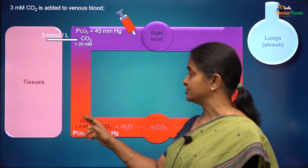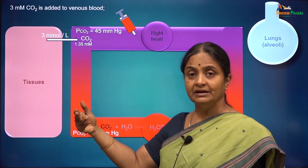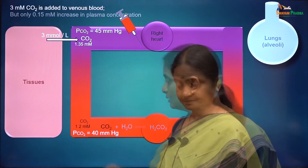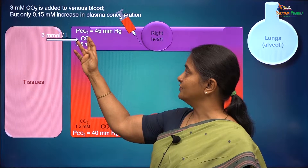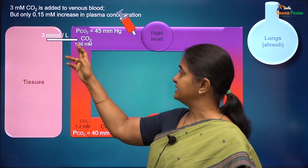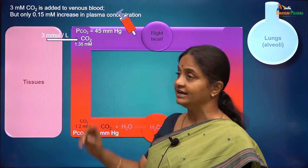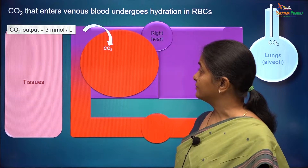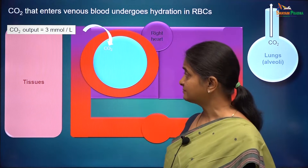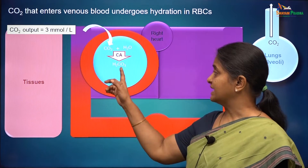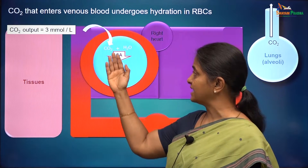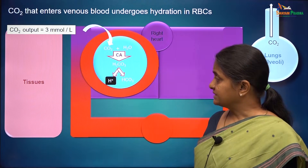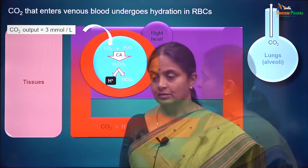While 3 millimoles per litre carbon dioxide comes into venous blood, only 0.15 millimoles per litre increase occurs in the dissolved carbon dioxide concentration. The rest moves into red blood cells and reacts with water in the cytoplasm to form carbonic acid. Red blood cells have the enzyme carbonic anhydrase which accelerates this reaction. Carbonic acid then protonates to yield hydrogen ions and bicarbonate ions. This forward reaction is accelerated within red blood cells by carbonic anhydrase.